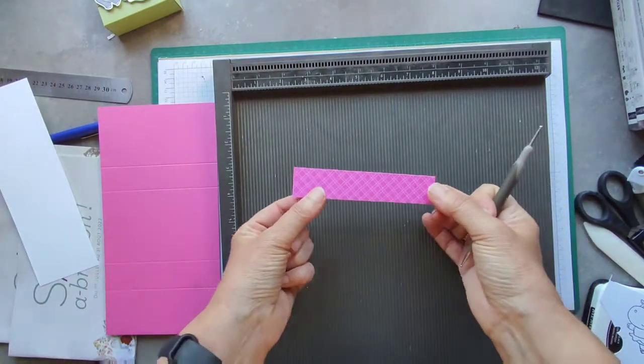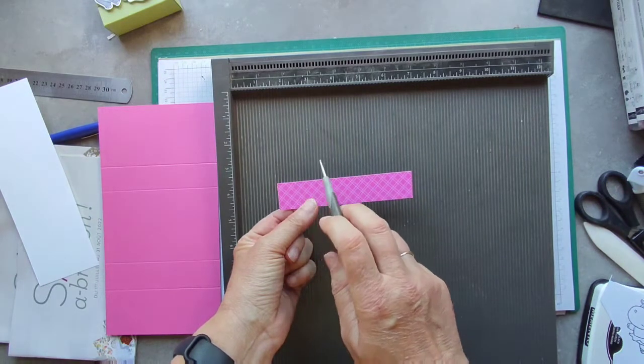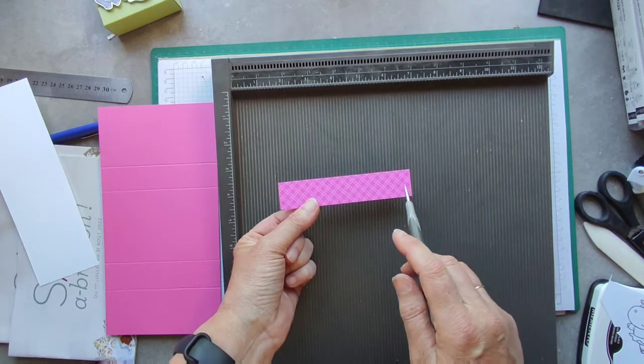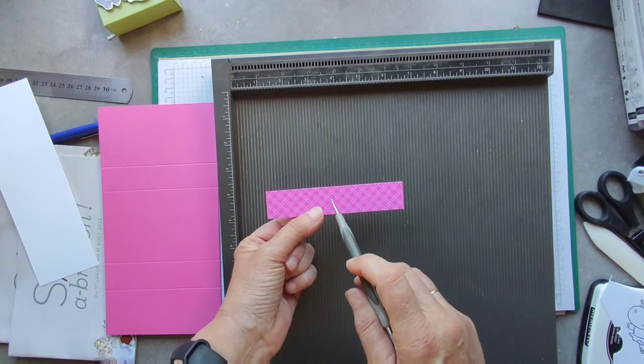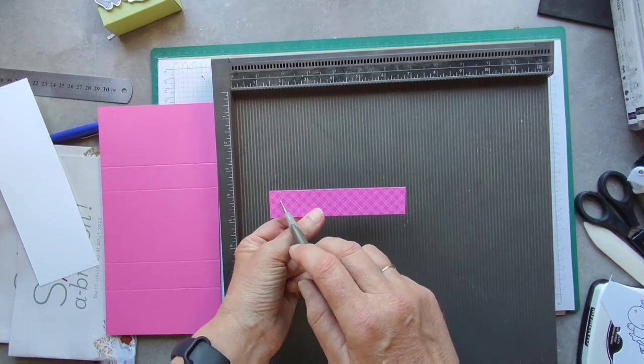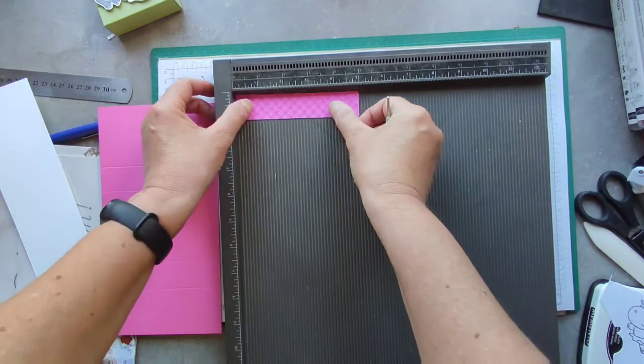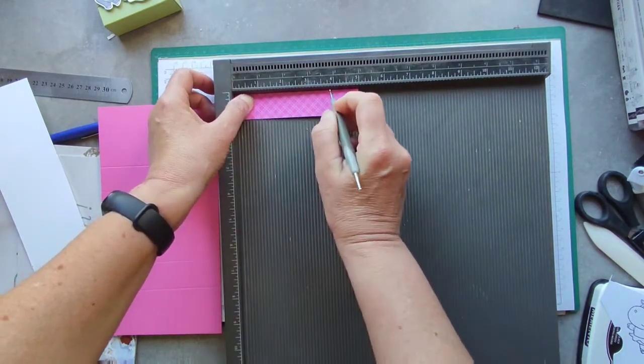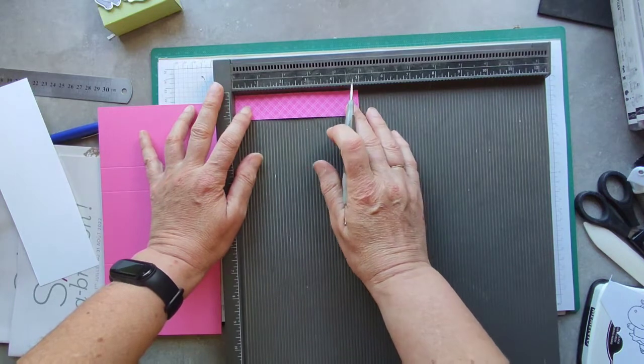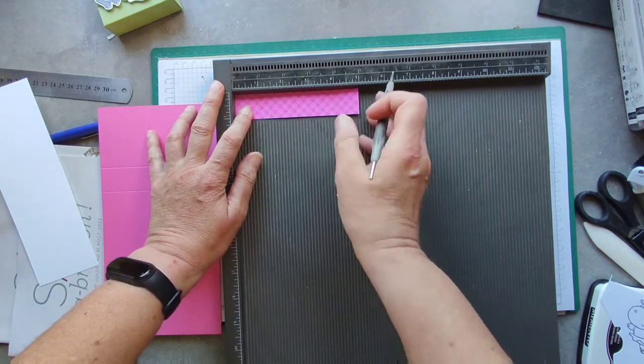You also need a piece of DSP which measures 5 inches by 1 inch, which is 12.5 by 2.5 centimeters, and on the long side I'm going to score at 1 and 4 inches, which is 2.5 and 10 centimeters.